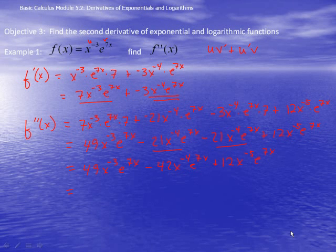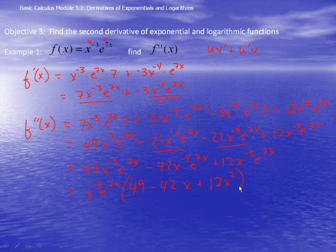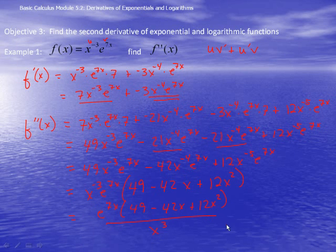The two middle terms combine to give minus 42x to the negative 4th e to the 7x. Factoring out x to the negative 3rd e to the 7x gives 49 minus 42x plus 12x squared, all over x to the 3rd. So the second derivative is e to the 7x times 49 minus 42x plus 12x squared, all over x to the 3rd.